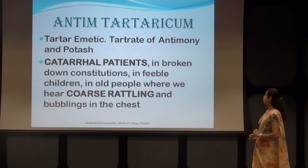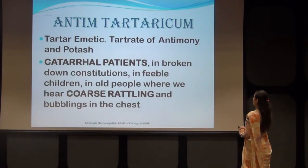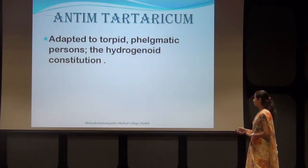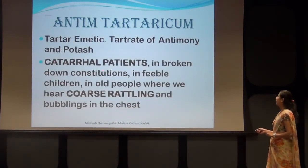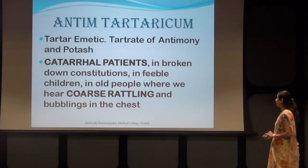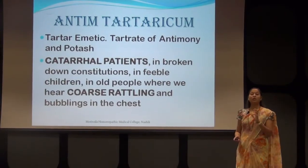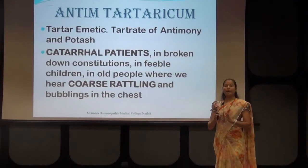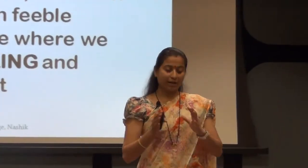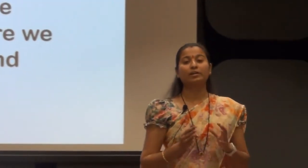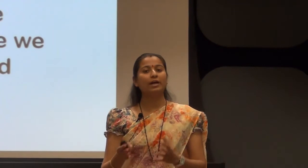The remedy is suited to catarrhal patients in broken-down constitution, in feeble children, in old people where we hear a coarse rattling and bubbling in the chest. This remedy has a catarrhal inflammation with a gradual pace of the disease. In early-stage catarrhal inflammation, the remedies are Aconite, Belladonna, etc., which have a very sudden onset.